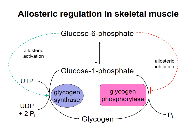Also, ATP is an allosteric inhibitor of glycogen phosphorylase in muscle. A high concentration of ATP in the muscle cell means that that cell has a lot of available energy, so there's no need for the cell to break down glycogen. But if ATP is being used up, then its concentration will fall, and the concentration of ADP and AMP in the cell will increase. It turns out that AMP is an allosteric activator of glycogen phosphorylase in muscle. When AMP concentrations are high, the muscle cell needs energy, and it will release glucose from storage by breaking down glycogen.